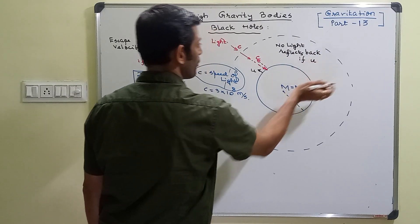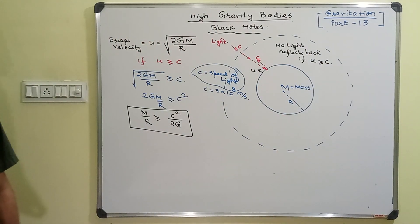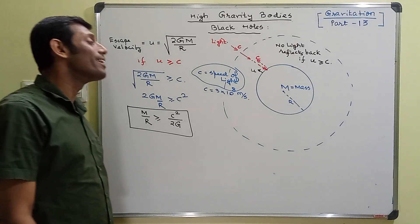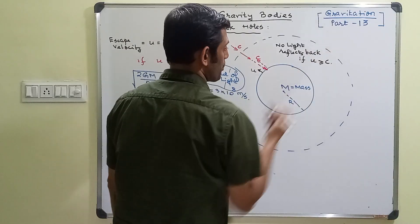If U is greater than or equal to c, if escape velocity needed is more than the speed of light, light cannot afford that. That means no light reflects back.